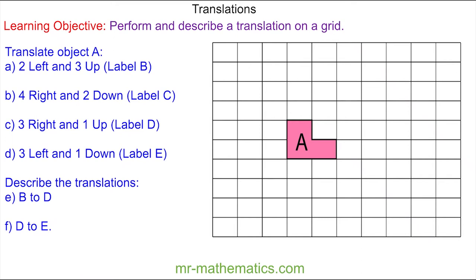Welcome to our lesson on translating shapes. A translation in maths is when we move an object to create an image, and we can do this using a horizontal and a vertical movement. We always have the horizontal first.